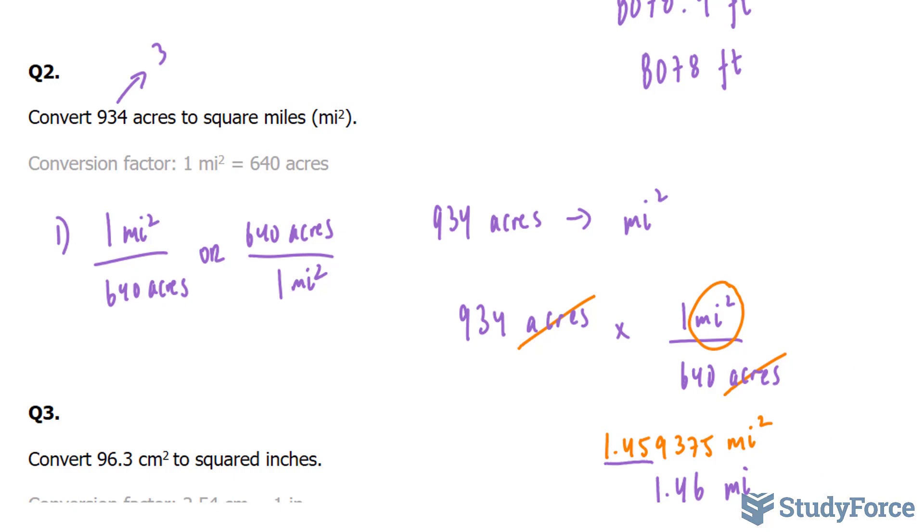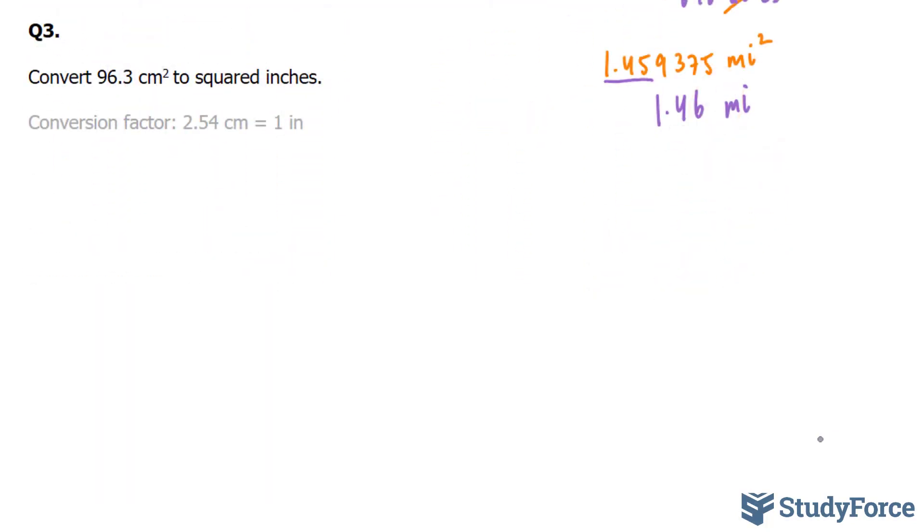Let's move on to our last question. In our last question, they're asking us to convert 96.3 centimeters squared to squared inches. The conversion factor is shown below. But unfortunately, the conversion factor is not in the squared form. Take a look at this. So what you have to do is convert the conversion factor.